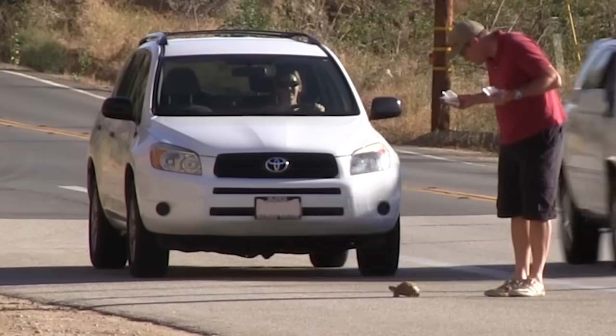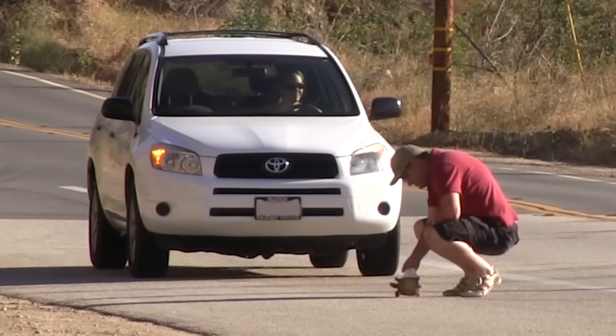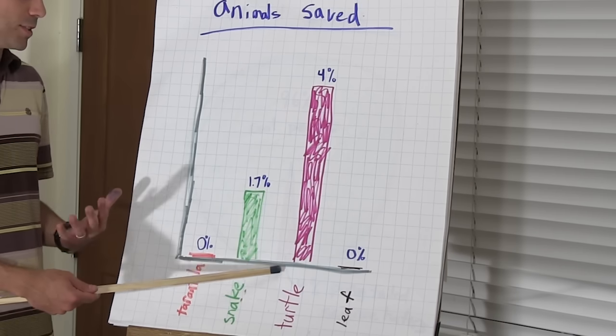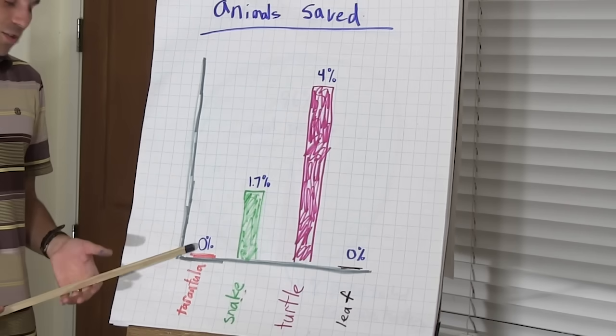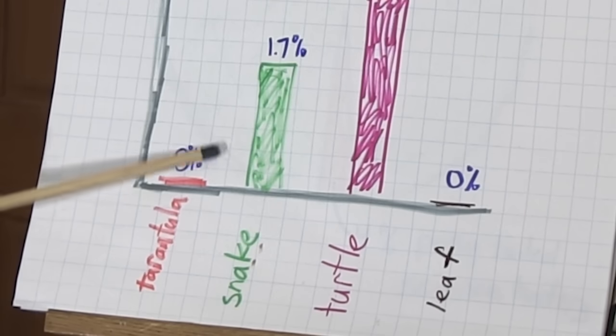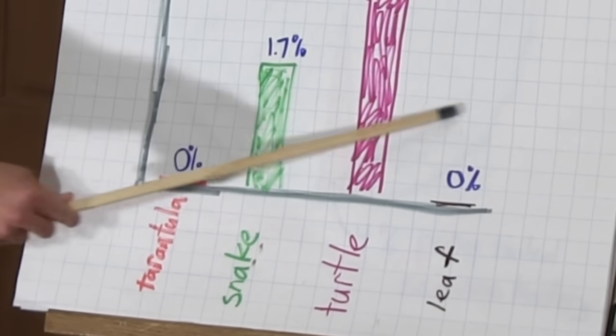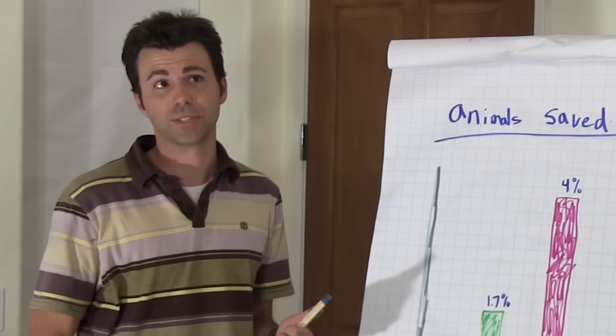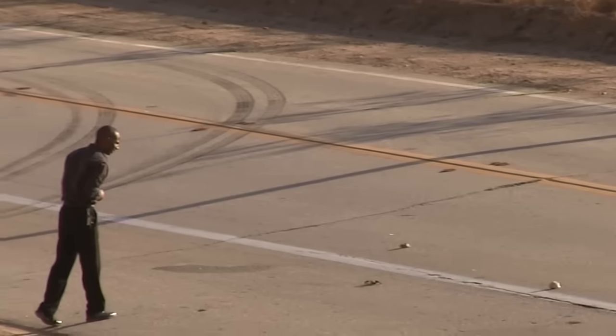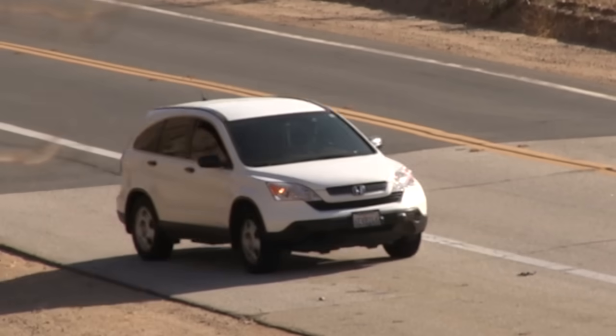So occasionally someone would be cool and they would stop and pull over and save what they thought was a real animal. And as you can see here, turtles definitely got saved the most. And then snakes. Tarantulas, I'm going to be honest, you need a new PR firm. You got saved exactly as many times as somebody saved the leaf. Which is none. Usually they would just stop and throw rocks at you and then run you over anyways.